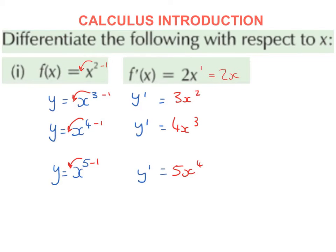When we are differentiating, we bring the power down in front, and then we reduce the power by 1. So in this case the power is a 2. So we bring the power down in front, and we get 2x, and we reduce the power by 1. 2 take away 1 is 1, and 2x to the power of 1 is just 2x.